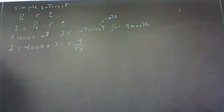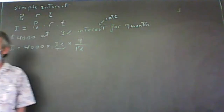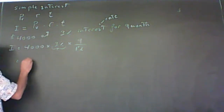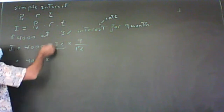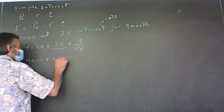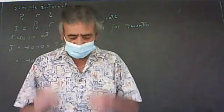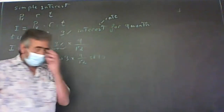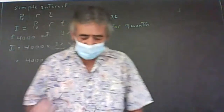0.75 will give you the exact value, but for four months, using the fraction 4/12 is more precise. So we have 4,000 times 0.03 times 9/12. That gives us $90. The interest paid on that amount is simply $90.